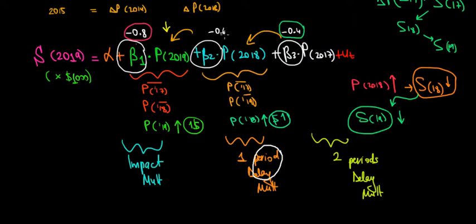So what's going to be the change in sales if one period before that the price increased by one dollar? And with the same logic, we can interpret the two periods delay multiplier because we have a delay in the effect on the outcome variable. And we saw the mechanism in the previous video that affects the sales in 17 eventually in 18 and after that it affects the sales in 2019. So we have this vocabulary over here that we need to understand.